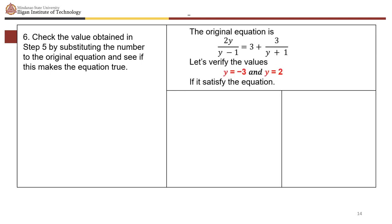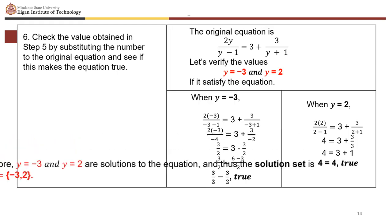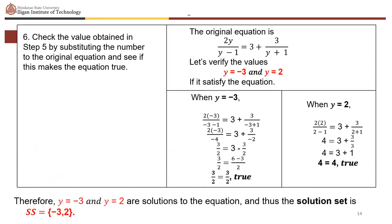Checking in 2y over (y minus 1) equals 3 plus 3 over (y plus 1): when y equals negative 3, we get 3 over 2 equals 3 over 2, which is true. When y equals 2, we get 4 equals 4, which is true. Therefore, the solution set is {negative 3, 2}.